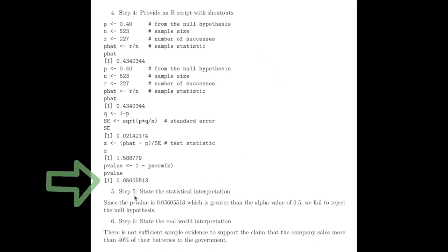There's our P value. In step 5, we state the statistical interpretation, which is because our P value was greater than 5%, we failed to reject the null hypothesis.